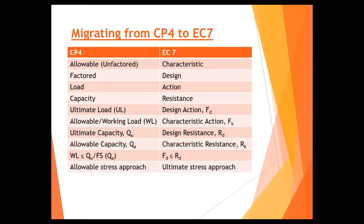You need to remember this, or else you will have difficulty reading the code. When I did my interview, I had to reread the whole EC7 to grasp it. Ultimate load means design action. Allowable load or working load means characteristic action. Likewise, ultimate and allowable capacity means design or characteristic resistance. The most fundamental difference between CP4 and EC7 is that in CP4 we factor down capacity to be higher than the allowable load, but in EC7 we want the design resistance to be higher than the design action — it's all in the ultimate limit state approach.